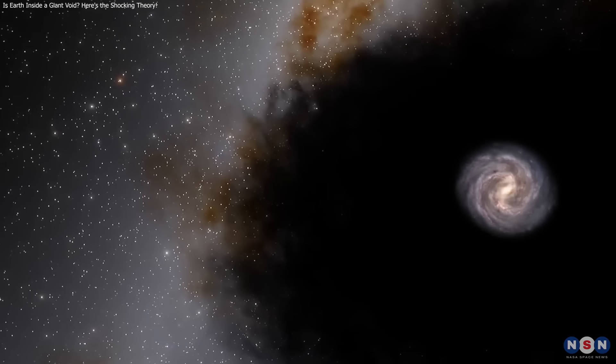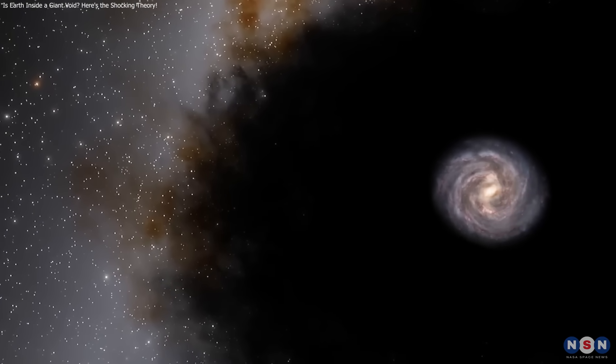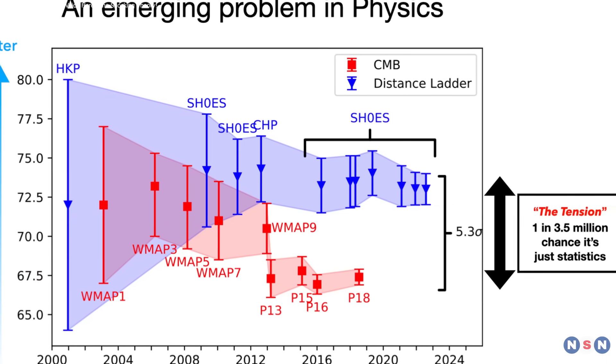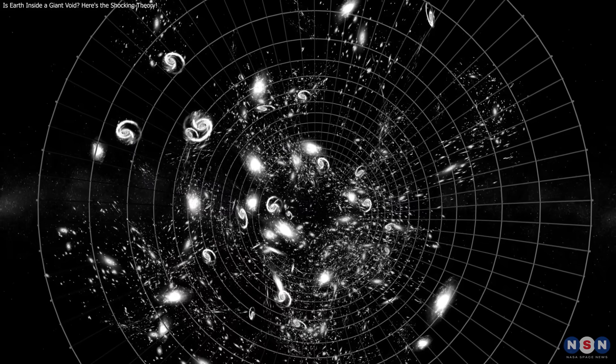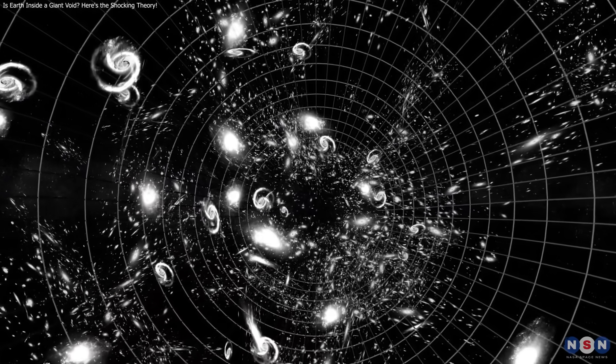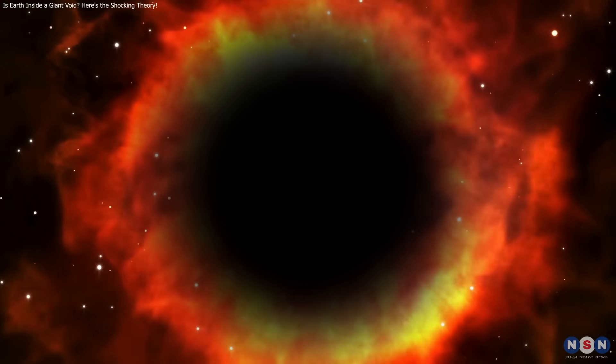The theory that Earth lies in a vast cosmic void offers a promising explanation for the Hubble Tension, potentially resolving the discrepancy in expansion rates. If confirmed, it could reshape our understanding of the universe's structure, age, and evolution, making it a key focus in ongoing cosmological research.